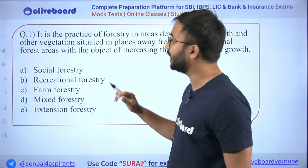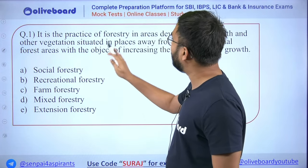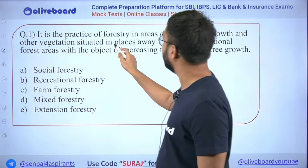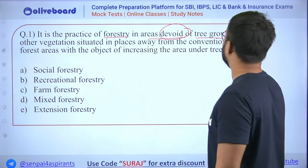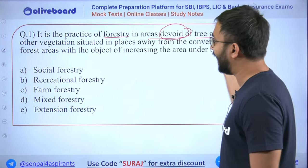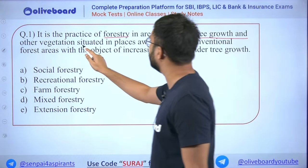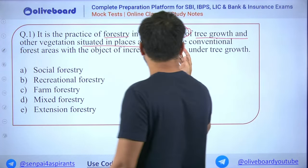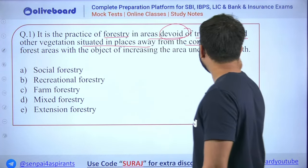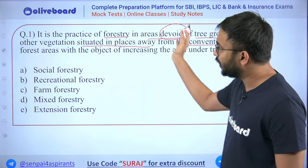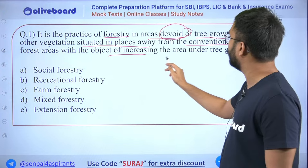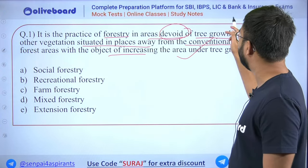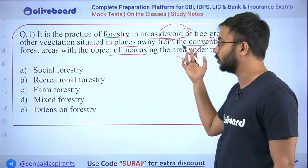First question: 'Pela' — it is a practice of forestry in areas devoid of tree growth and vegetation, situated in places away from conventional forest areas, with the objective of increasing the area under tree growth.